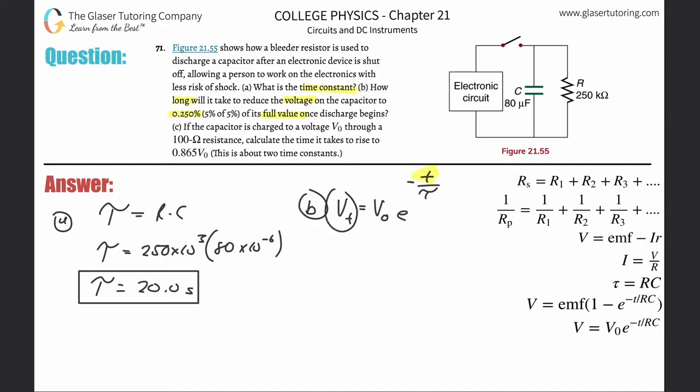They don't tell us the final voltage or the initial, but they tell us the percent change. The fractional change is 0.250 divided by 100, which is 0.00250. In other words, VT over VO is equal to E raised to the negative T over tau.